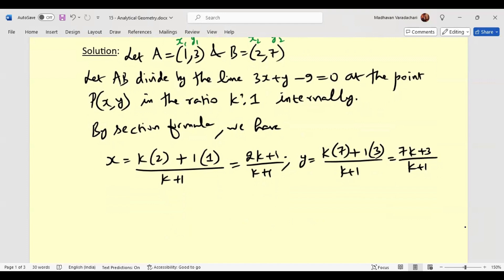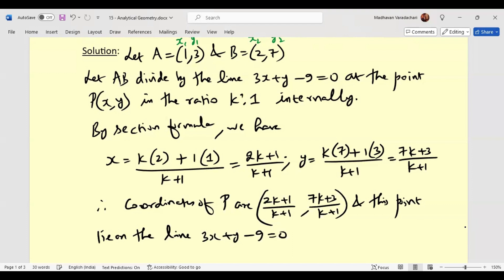So therefore, coordinates of P are (2k plus 1) by (k plus 1), comma (7k plus 3) by (k plus 1). And this point lies on the line 3x plus y minus 9 equal to 0.